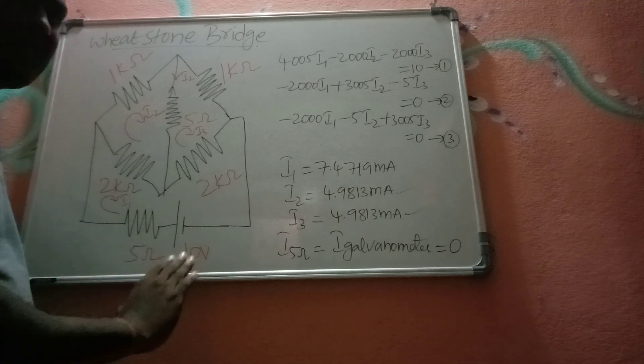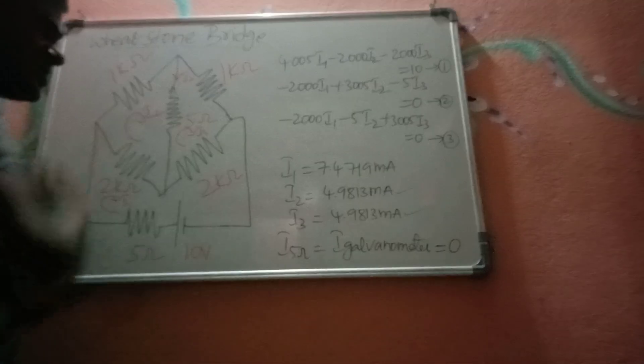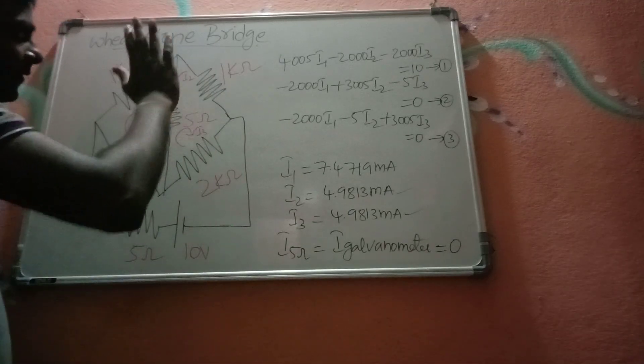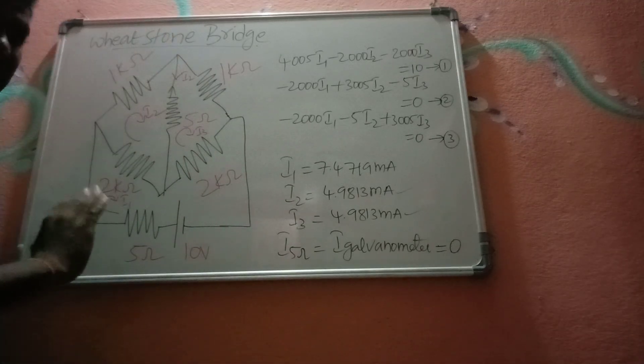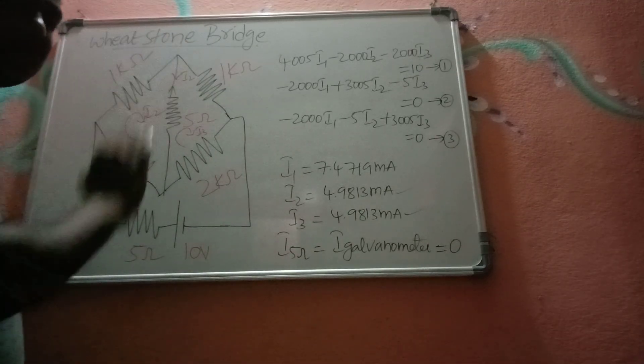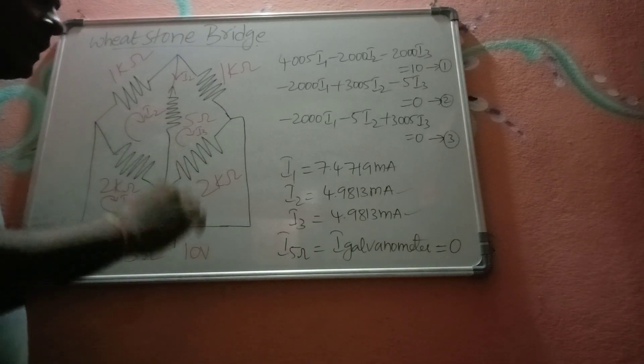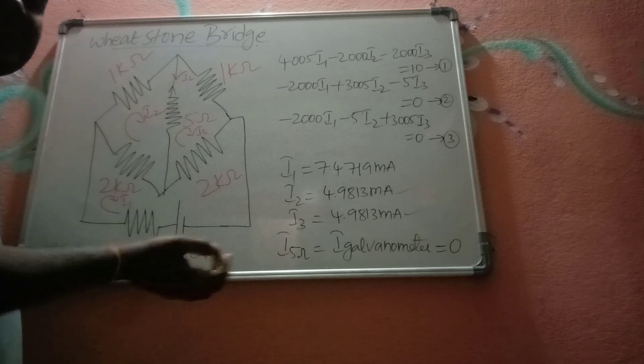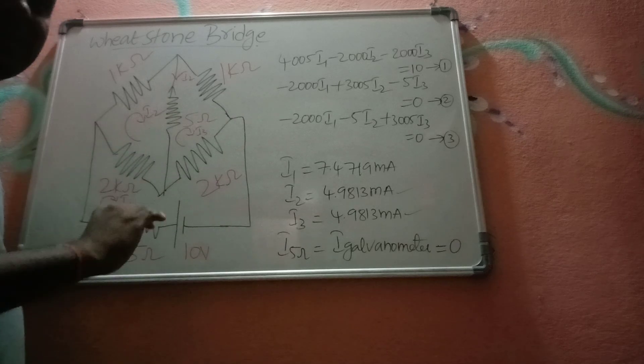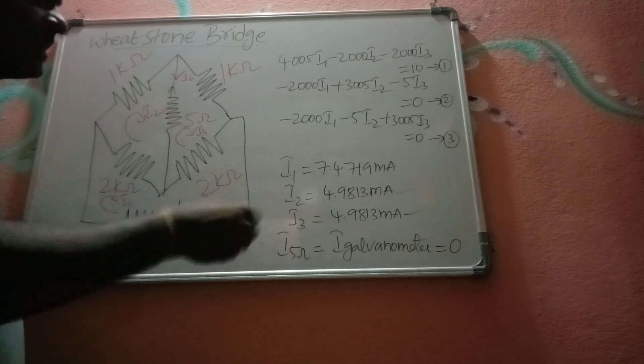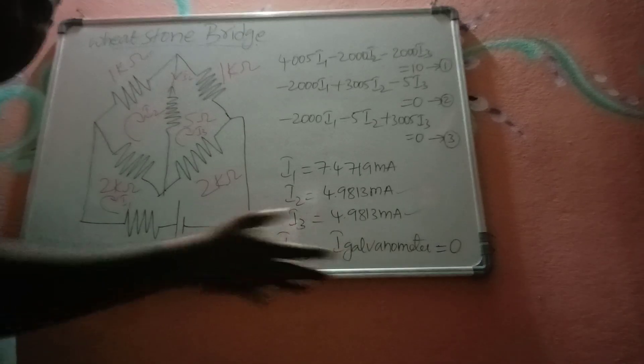Even though I used a practical battery and a practical galvanometer, the balance condition is not changed. So the galvanometer resistance or the internal resistance of the battery cannot affect the null condition. This is the key concept from the Wheatstone bridge analysis that is useful in analyzing Kelvin's double bridge in a very simple way.